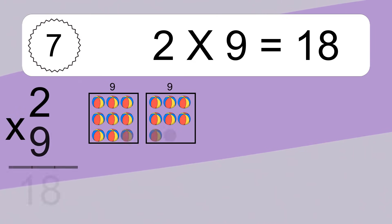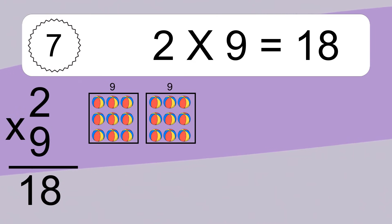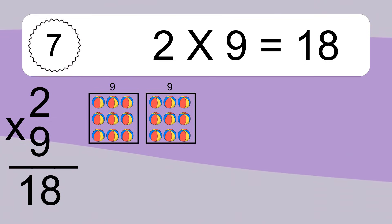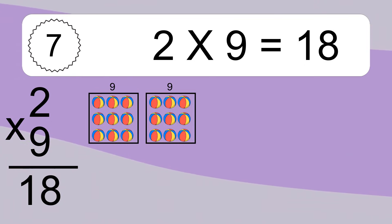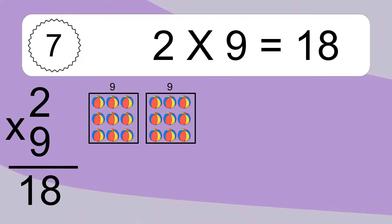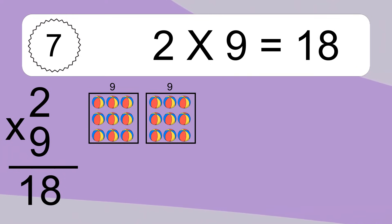2 times 9 equals 18. We have 2 boxes, and each box has 9 colorful balls inside. If you count all the balls in all the boxes together, you will have 2 times 9 balls. This equals 18 balls.